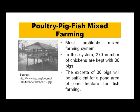Poultry-pig-fish mixed farming is the most profitable mixed farming system. In this system, 270 chickens are kept with 30 pigs, and the excreta of 30 pigs is sufficient for a pond area of 1 hectare for fish farming. In this completely integrated program, poultry droppings and pig droppings are used as natural feed for fish, and the fish serve as animal protein for humans.